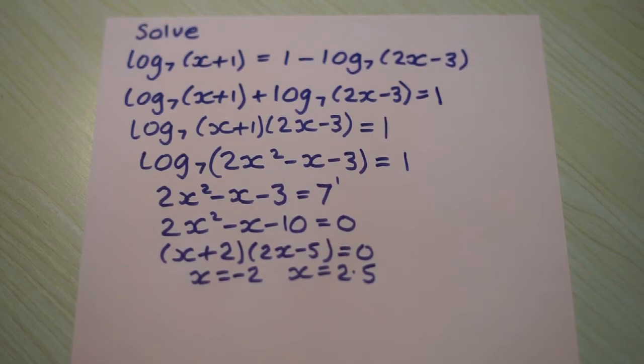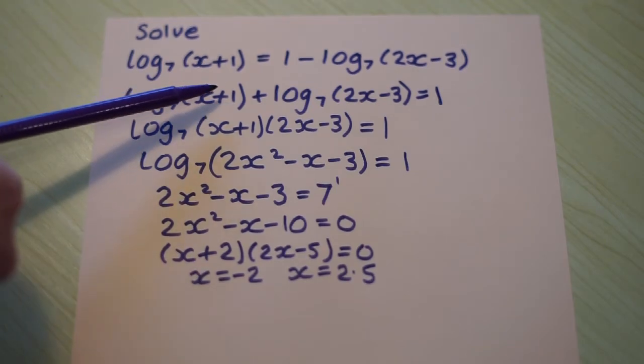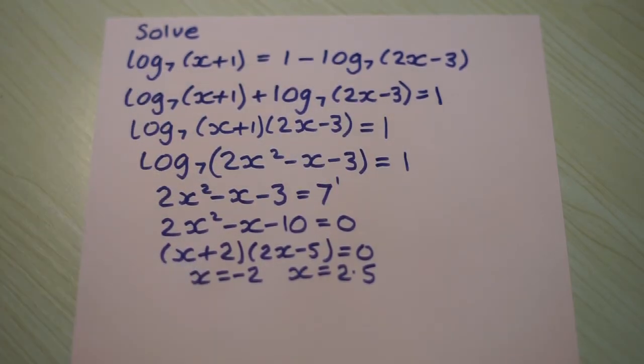x equals negative 2 can't be a solution because this would lead to us having to take log of a negative number. So therefore the solution is 2.5.